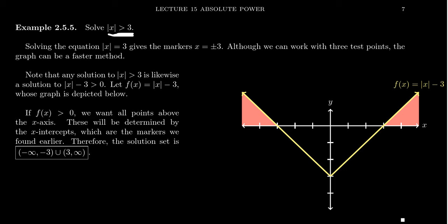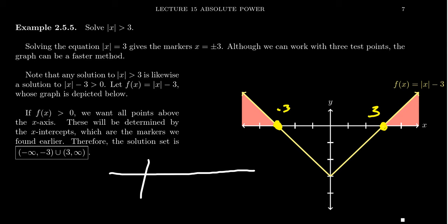So with the example right here, if you're trying to solve the inequality the absolute value of x is greater than 3, first switch it over to the equation: the absolute value of x equals 3. Since 3 is positive, we get that this is solvable and we'll get x equals plus or minus 3. This gives us our markers, so we mark negative 3 and positive 3 on the real line.